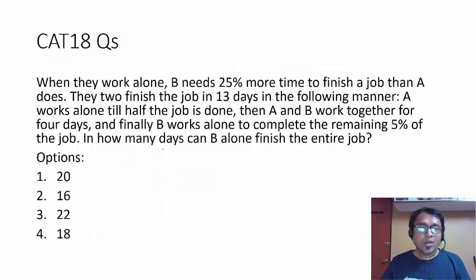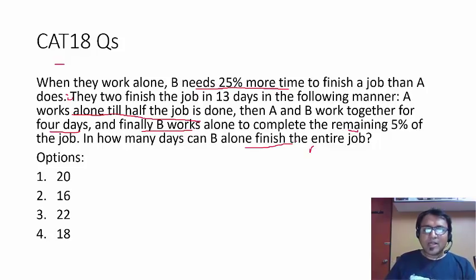But let's take one more question. When they work alone, B needs 25% more time to finish the job than A does. The two finish the job in 13 days in the following manner. A works alone till half the job is done. Then A and B together for 4 days. And finally B works alone to complete the remaining 5% of the work. In how many days can B alone finish the entire job? So this looks tough. But if you actually see, you can easily get the answer.